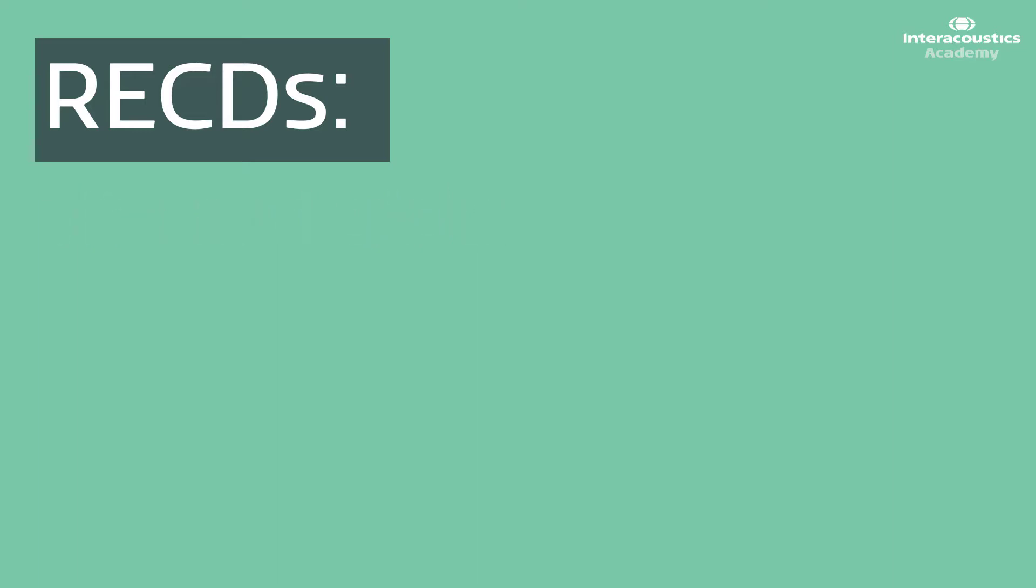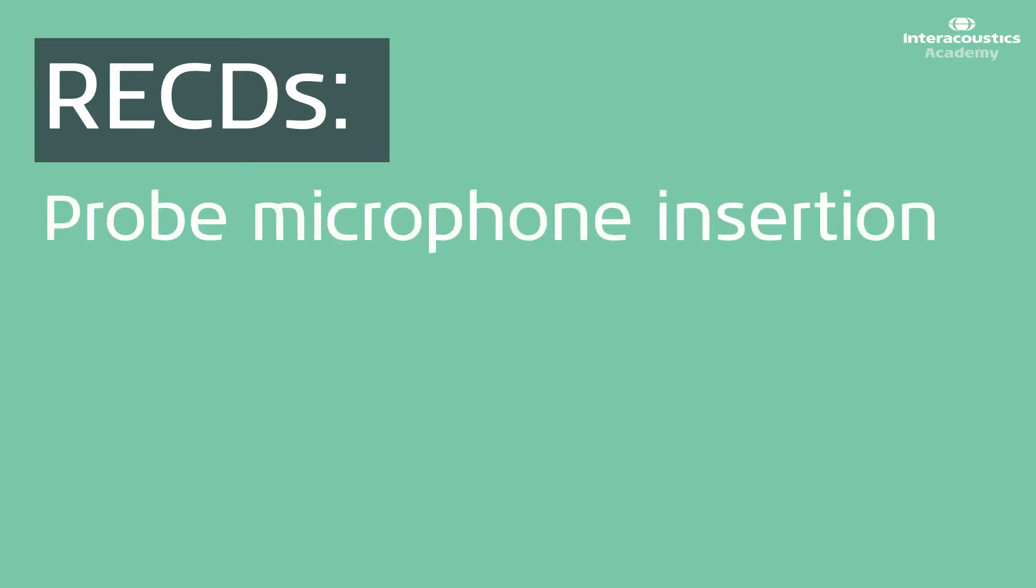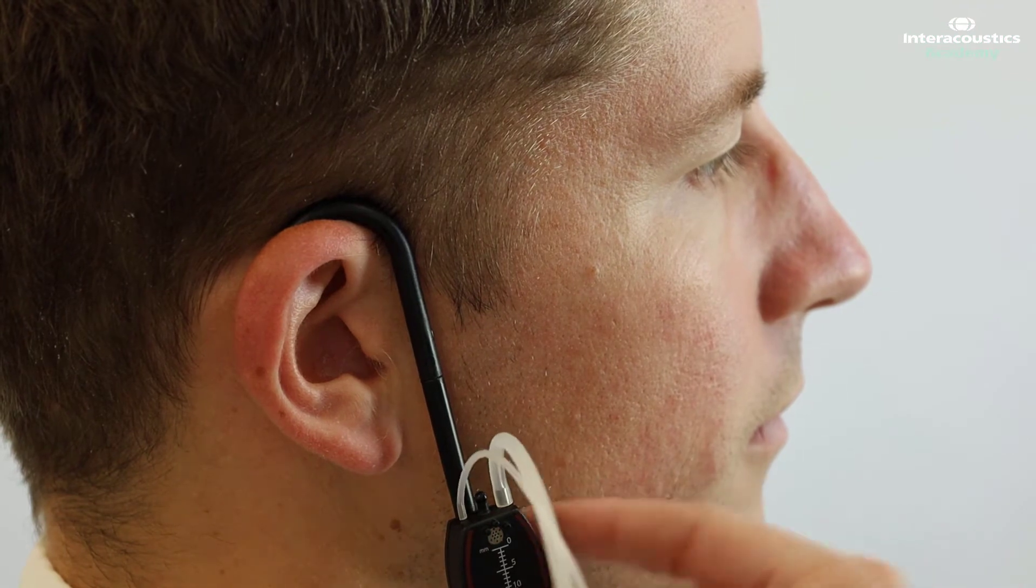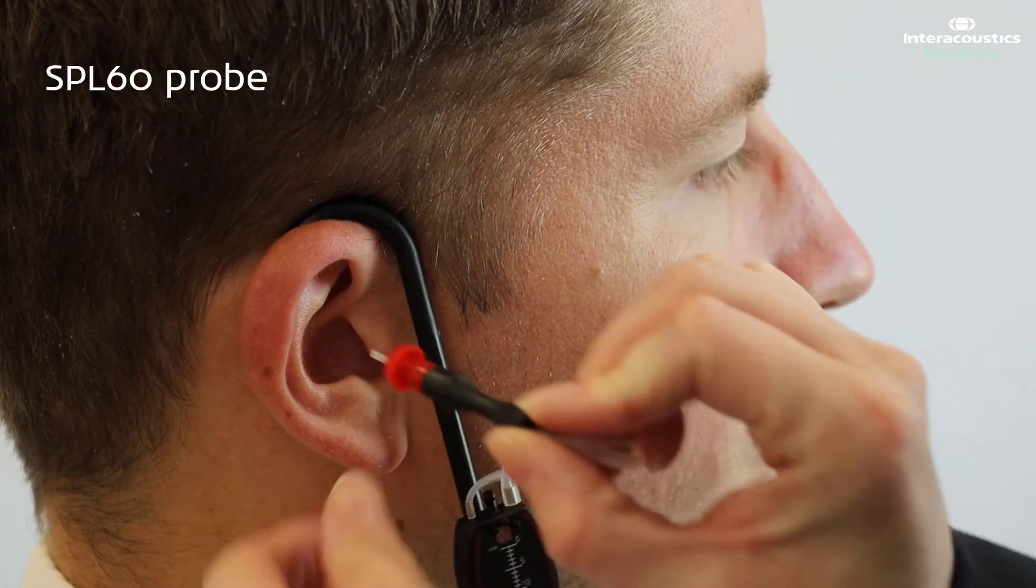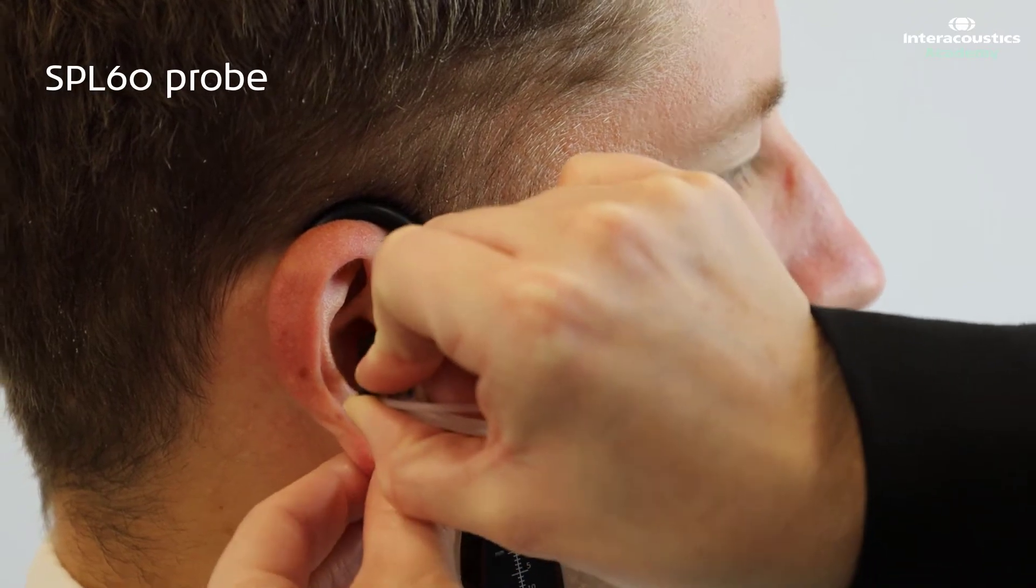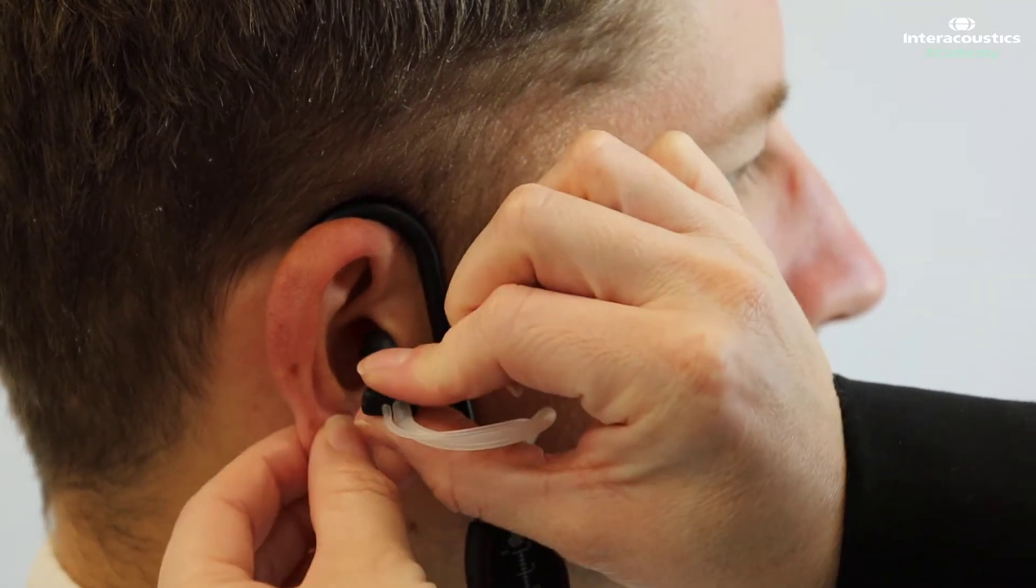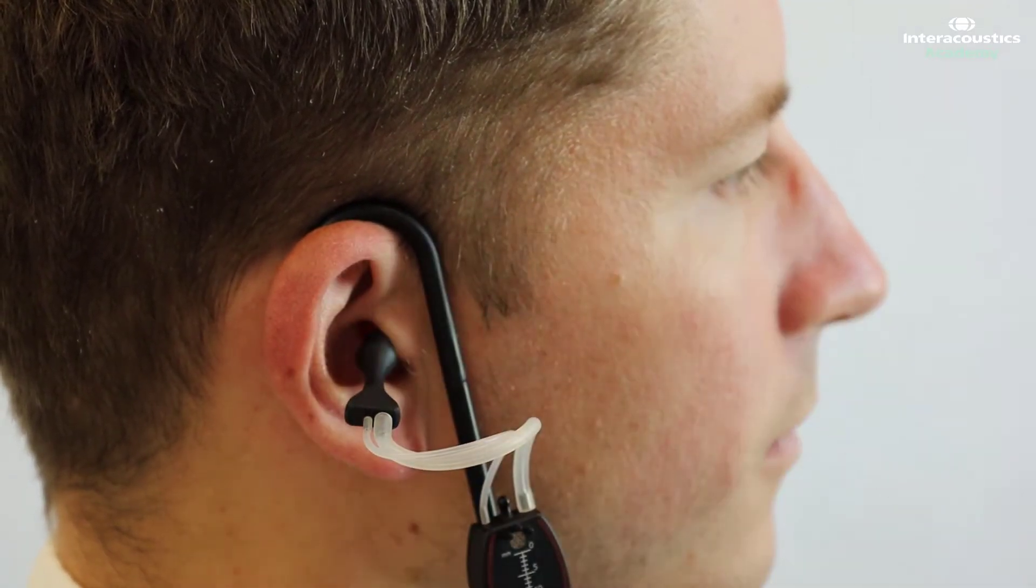With both REMs and RECDs, probe microphone insertion is often the most daunting part of the process. Making use of the SPL60 probe simplifies this step, as there is only one object to insert into the patient's ear with the probe microphone built into the probe, making it a very easy and quick way of achieving an accurate measurement.